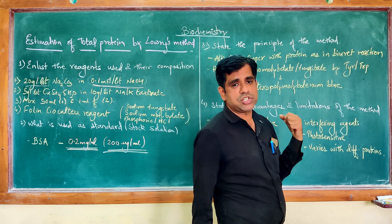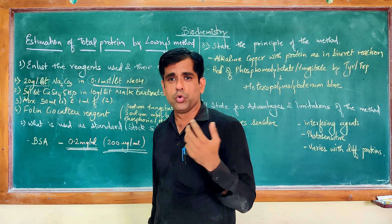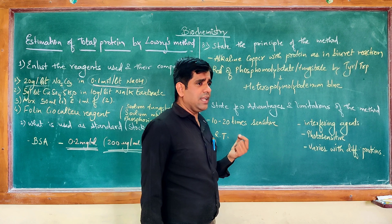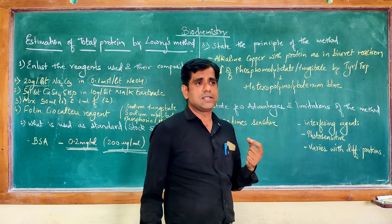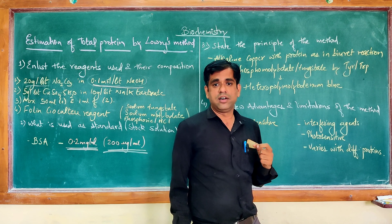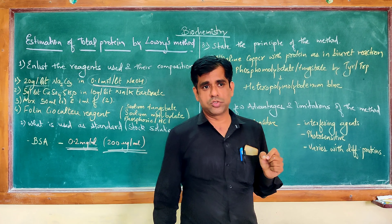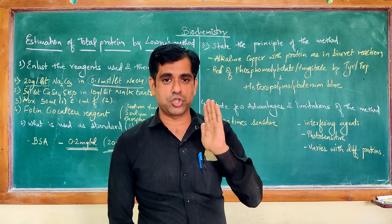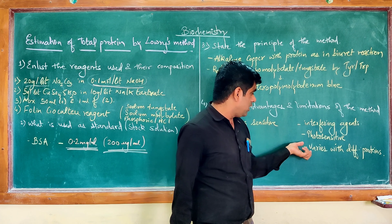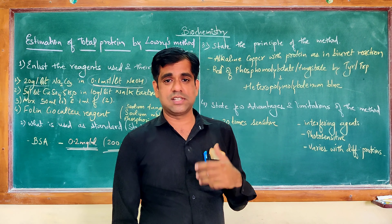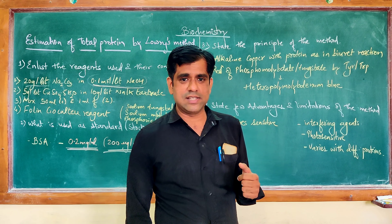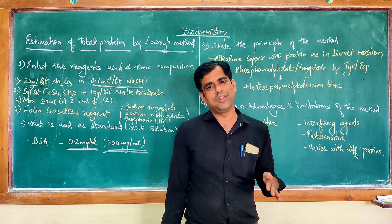Regarding advantages and limitations: it is a simple method performed at room temperature with no heating or boiling required, and it is very sensitive — 10 to 20 times more sensitive than traditional methods. Limitations include interference by many agents such as strong acids and ammonium salts, which can disrupt color formation. The method is also photosensitive, so incubations must be done in the dark or under constant illumination. The major drawback is that results vary between different proteins, because the color is produced by only a few amino acids — tyrosine, tryptophan, and cysteine — so proteins differing in these amino acids give different color intensities at the same concentration.